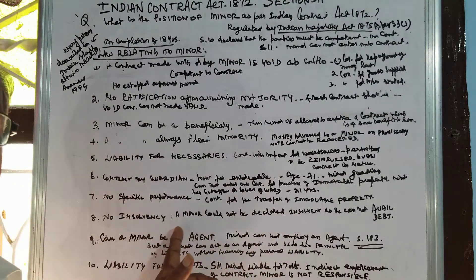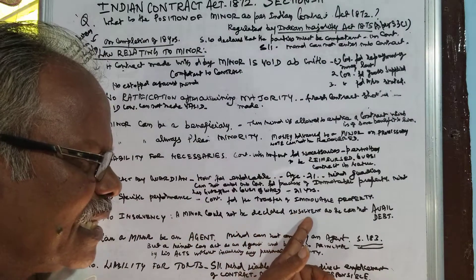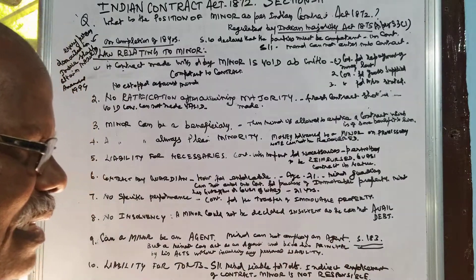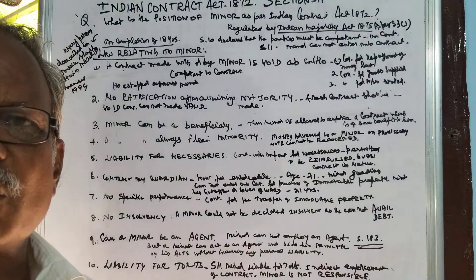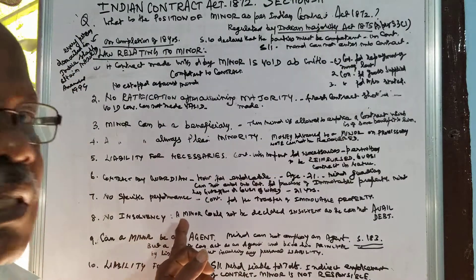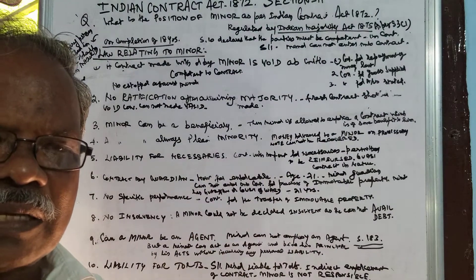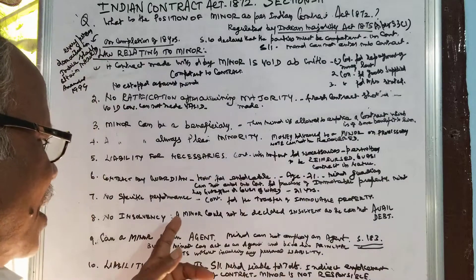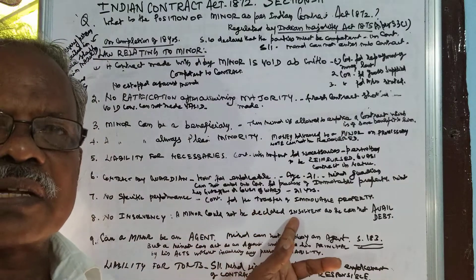There is no insolvency for a minor. A minor cannot be declared insolvent as he cannot avail debt. Since he is not allowed to avail debt, insolvency — that is, bankruptcy or the issue of a yellow notice — cannot apply to a minor. A minor simply cannot be declared as an insolvent.